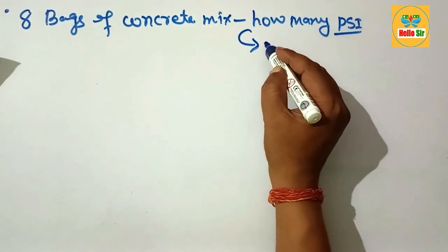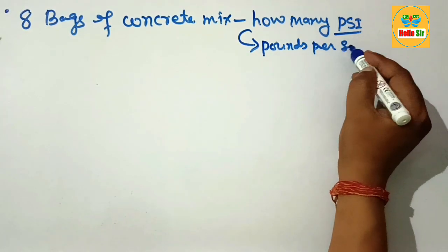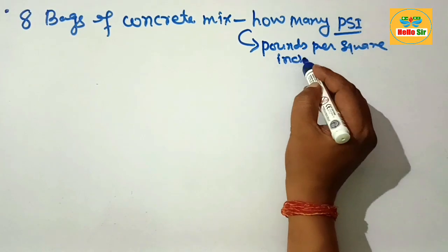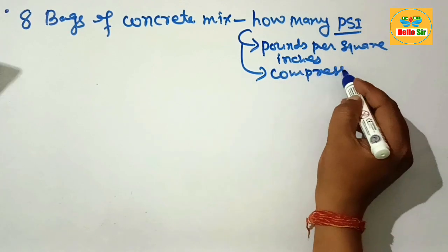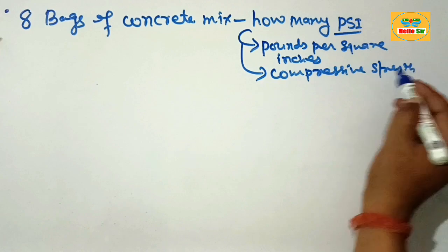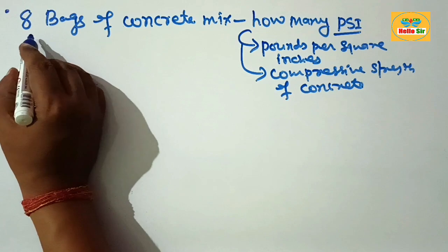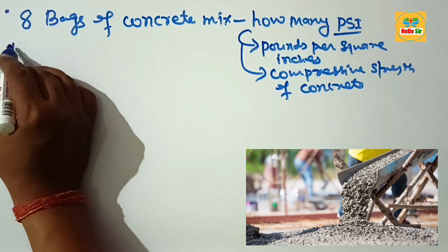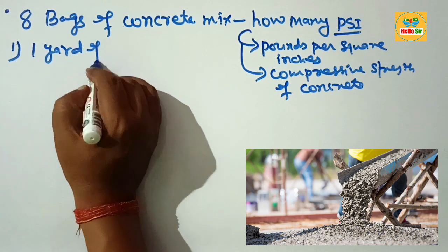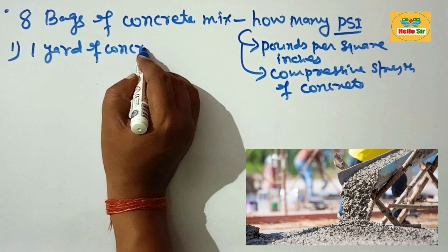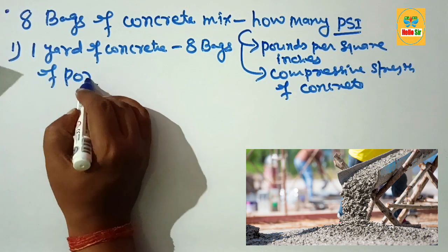PSI is the strength in pounds per square inch, and that is the compressive strength of concrete. Here you have a concrete mix prepared with 8 bags of Portland cement, meaning 1 yard of concrete is prepared by 8 bags of Portland cement.